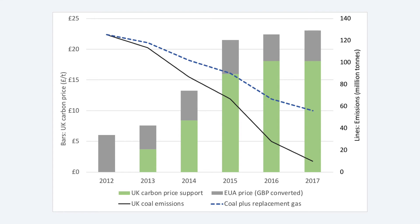Not all of this fall has been due to the carbon price — some coal plants were due to close anyway, for example. However, about 75% of this fall, about 45 million tonnes, is attributable to the carbon price. This is more than 10% of total UK emissions. Carbon pricing has thus been highly effective at reducing emissions.